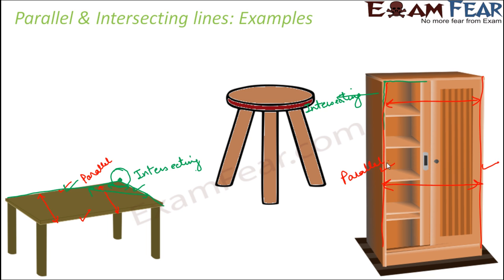Think of a stool. Look at the legs of the stool. Are they parallel lines? Not really, because they are not straight — they are bending away from each other. The distance between them is gradually increasing. So even though we do not see the legs meeting at a point, they appear to meet at some point since the distance between them doesn't remain the same throughout. Therefore, this is also an example of intersecting lines.